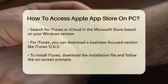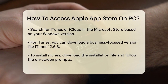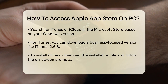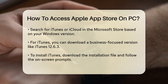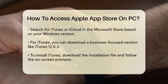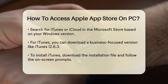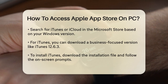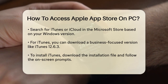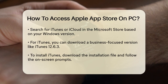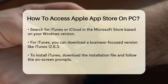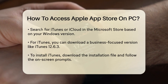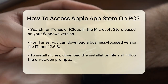To get started, go to the Microsoft Store on your PC and search for iTunes or iCloud. For iTunes, you can download the version specifically aimed at business environments, such as iTunes 12.6.3. Go to the Microsoft Store, search for iTunes, and select the version you need. Download the installation file, double-click it, and follow the on-screen instructions to install iTunes on your PC.